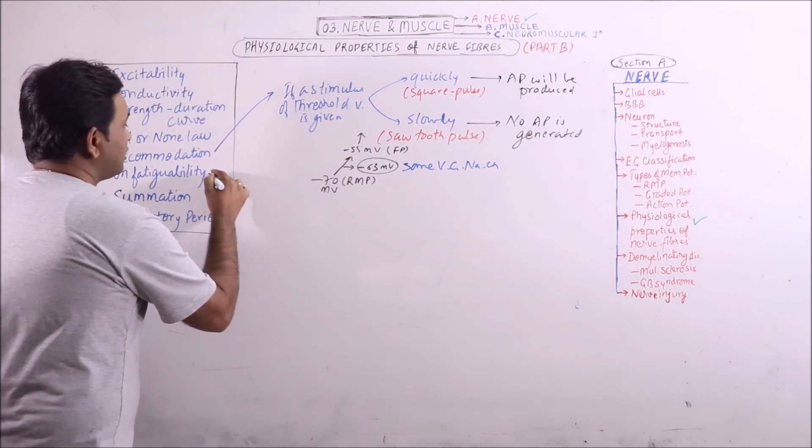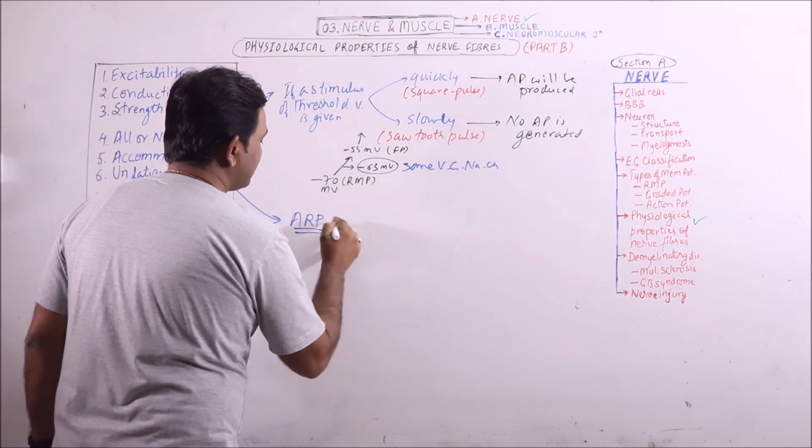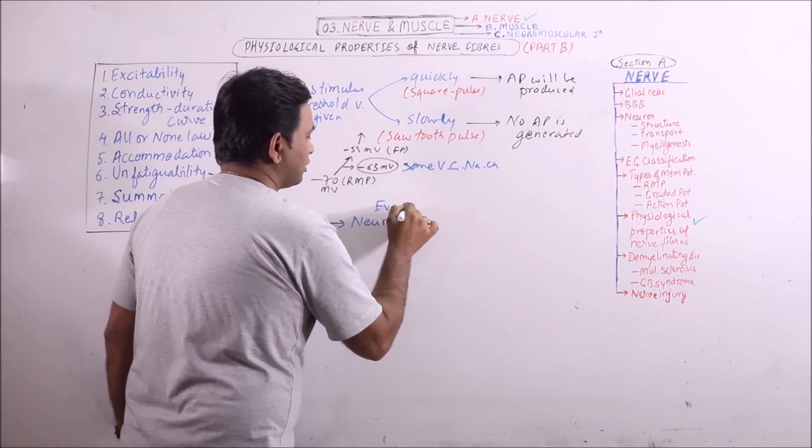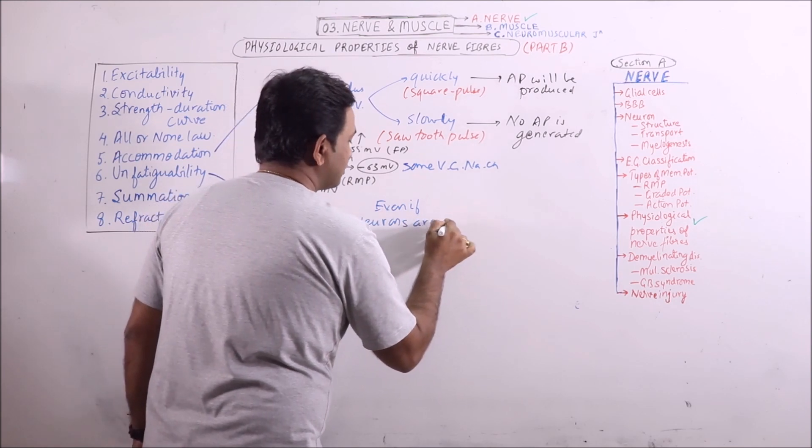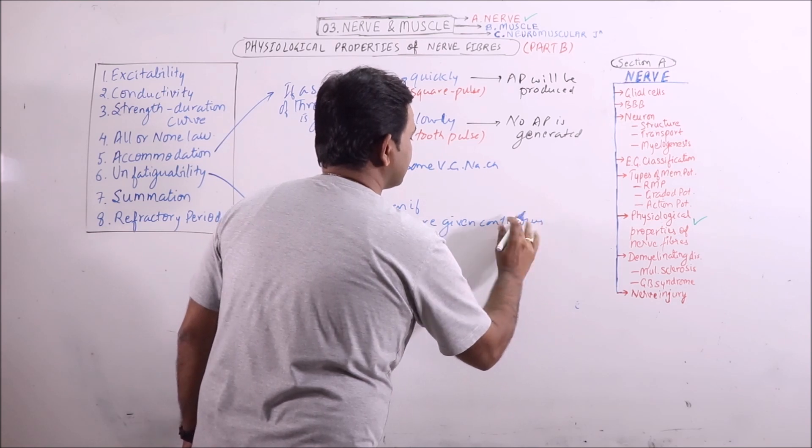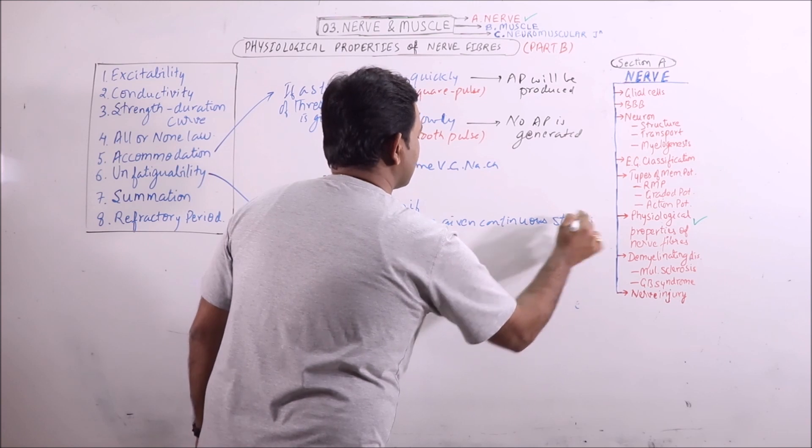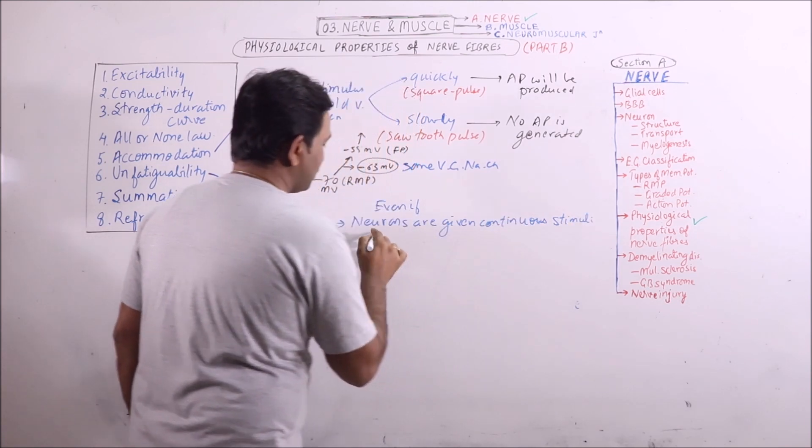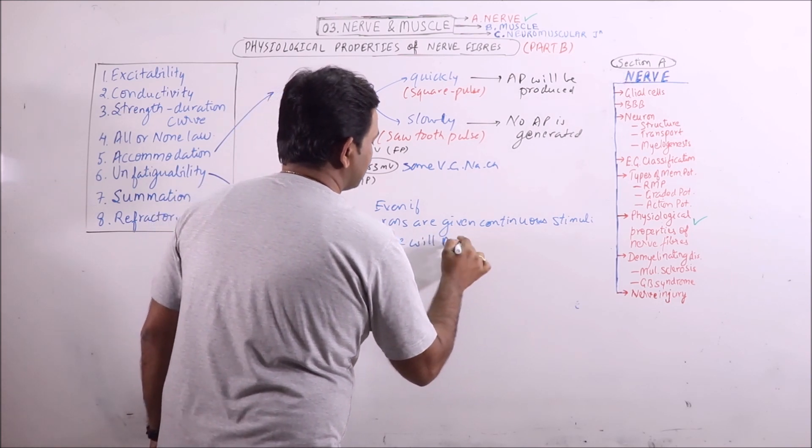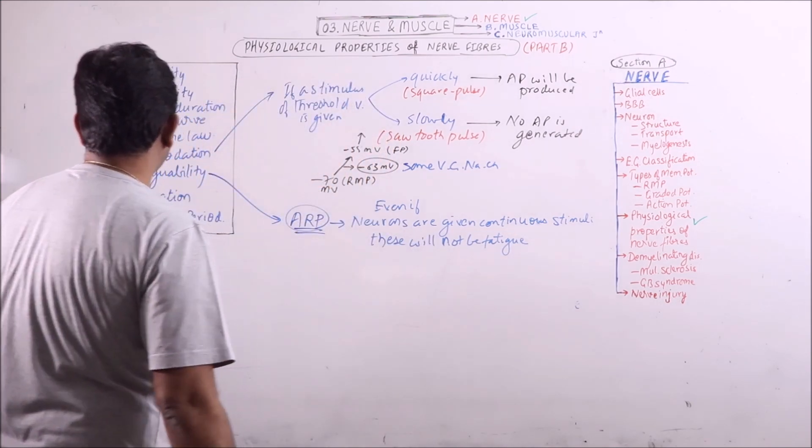Now the next is unfatigability. Because there is absolute refractory period, even if neurons are given continuous stimuli, these will not be fatigued because of absolute refractory period.